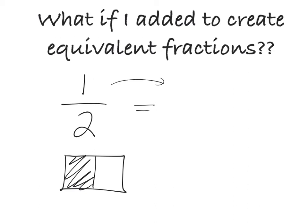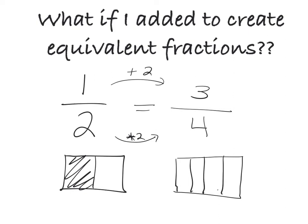And I add 2 here. This would give me 3 fourths. Well think about what you know about 3 fourths. 3 fourths is greater than a half. So are they equivalent? No. So we cannot add. Because look, 3 fourths is much closer to a whole. This is a smaller space than this one. And so they're not equivalent. So no, you cannot add to make equivalent fractions.